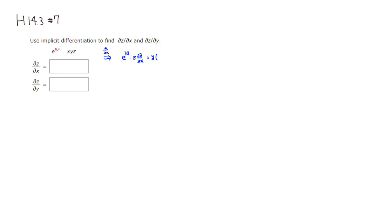On the right-hand side, y is just a constant so I'll put it out front. Between x and z, this is a product, so we're going to have to use the product rule. The partial derivative of x with respect to x is 1, so we get 1 times z, plus x times the partial of z with respect to x.